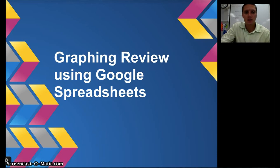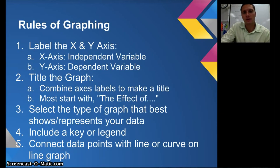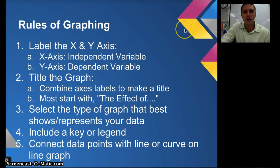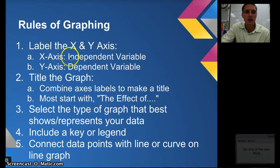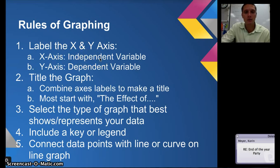There are a couple of rules of graphing that we want to keep in mind when creating our graph. The first is that we always need to have a label on the x and y axes. This is extremely important — it lets your viewer or reader know what we're looking at. This applies for pretty much every graph, usually except for a pie graph. On our x-axis we put our independent variable, and on our y-axis we put our dependent variable.